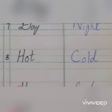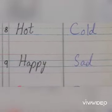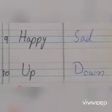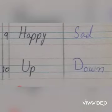Number eight: hot (garam) — cold (thanda). Number nine: happy (khush) — sad. Number ten: up (upar) — down (niche).